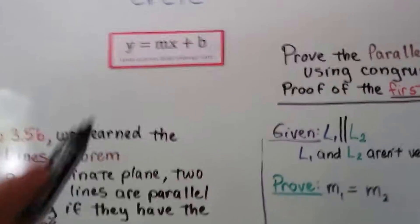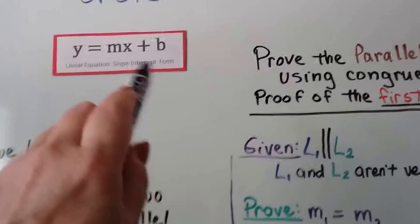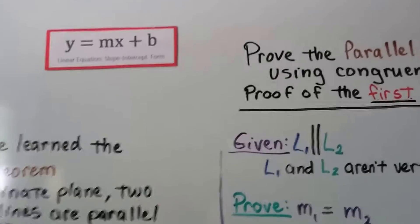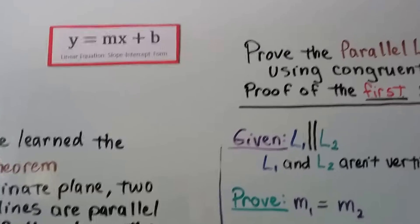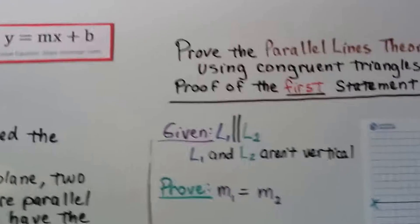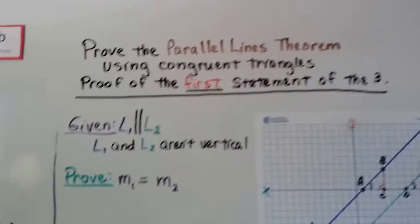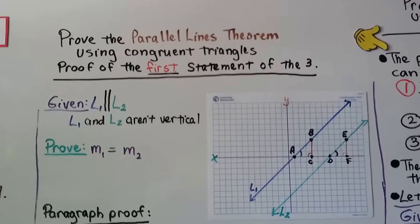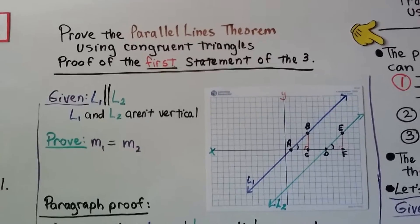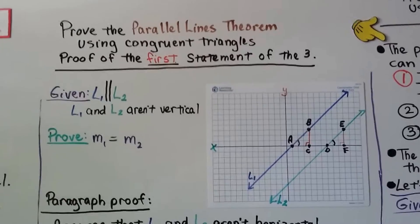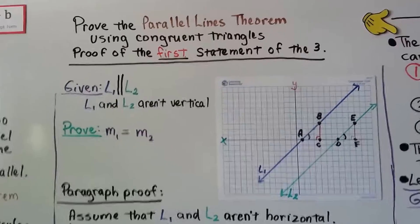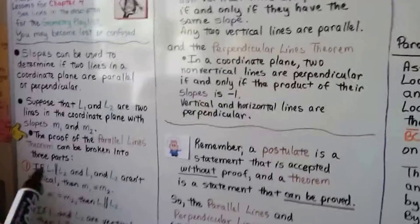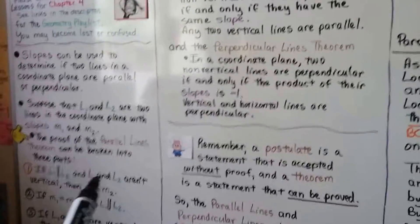Remember, in slope-intercept form, M is the slope — that's why they're using M. We're going to prove the parallel lines theorem using congruent triangles; this is the proof of the first statement of the three.